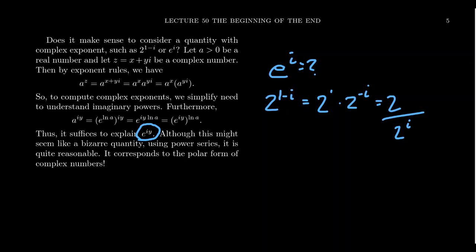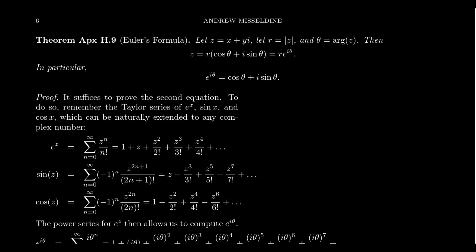And although this might be bizarre to even think about e to the i, what does that even mean quantitatively? Whether we ought to do it or not, turns out there is actually a very natural candidate on how to handle this creature right here. And the idea is we're actually going to use power series to make sense of this imaginary exponent. Because with power series, we can make perfect sense of what this is. And I'll show you what I mean in just a moment. And it turns out that this is really just going to connect us to the polar form of complex numbers. And so it's not going to seem so bizarre once we have the right perspective.